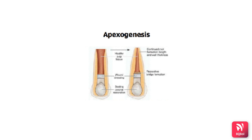The goal of treatment is to allow the apex to mature and the dentin walls to thicken sufficiently to permit successful root canal therapy. Pulp survival is therefore very important in complicated crown fractures involving the enamel, dentin, and pulp in open apex cases.